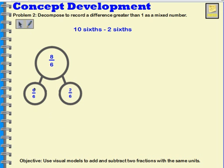Because 6 plus 2 is 8. So this would be 1 whole and 2 sixths. So my answer would be 1 and 2 sixths.